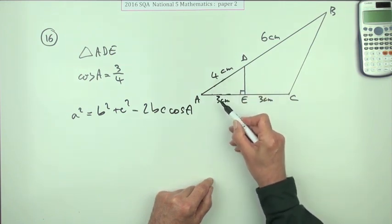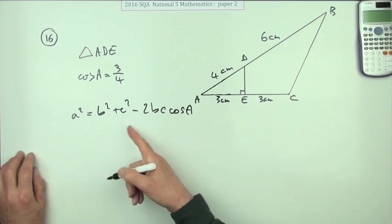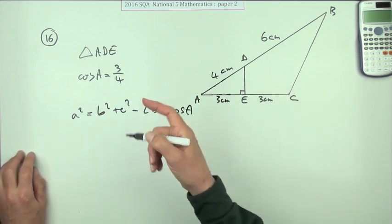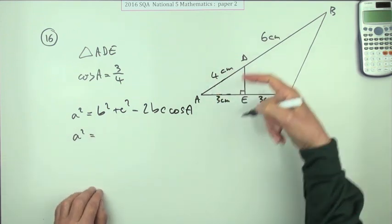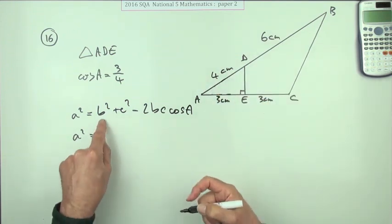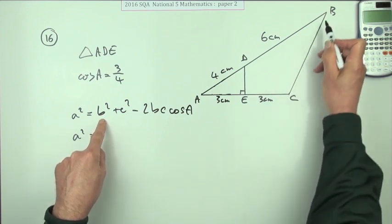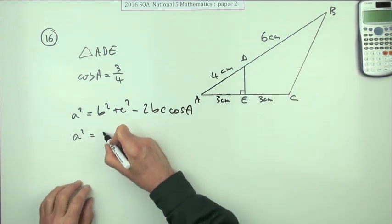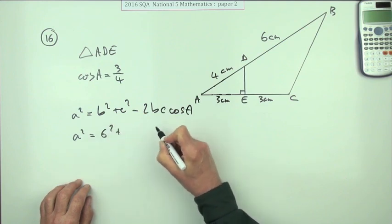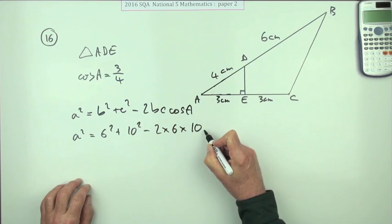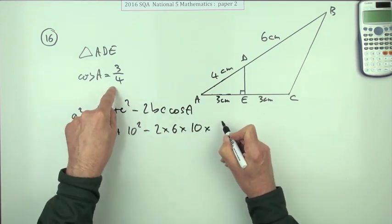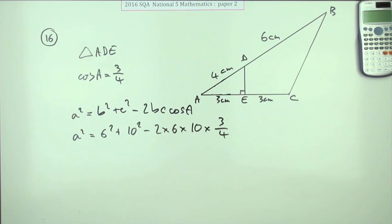I can work out BC straight away now. A squared equals - so that side is 10 - b is actually this side here, so 6 squared plus 10 squared minus 2 times 6 times 10 times the cosine of A, which is 3 quarters.